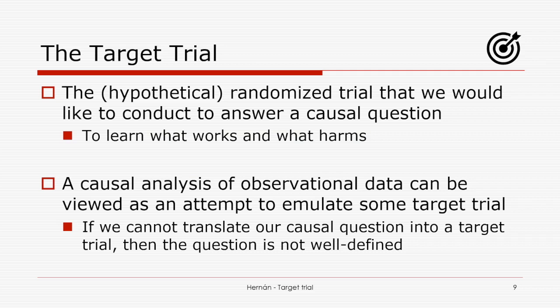Thinking in terms of a target trial has an important implication: any observational analysis we conduct for causal inference can be viewed as an attempt to emulate the target trial. We know which target trial could answer the question, and our goal with observational data is to emulate it as closely as possible. In fact, if we cannot explain what our target trial is when analyzing observational data, chances are our causal question is not very well defined.